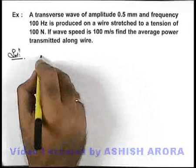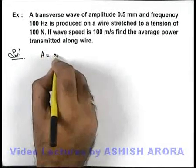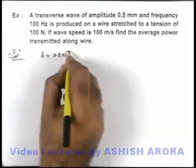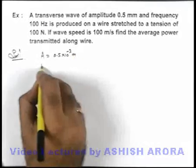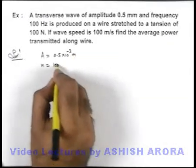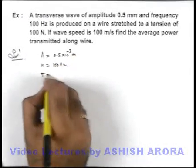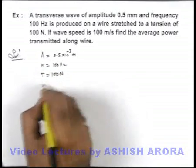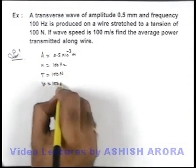First, if we write down the data, it is given that amplitude is 0.5 × 10^-3 m, frequency is 100 Hz, tension in the string is 100 N, and wave speed is 100 m/s.